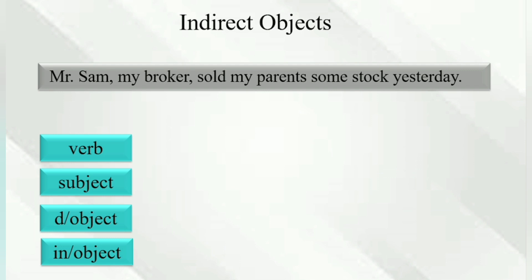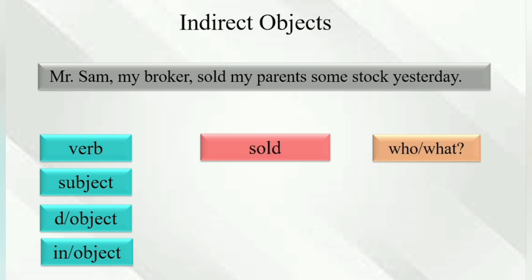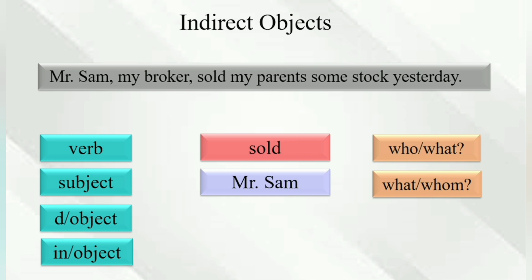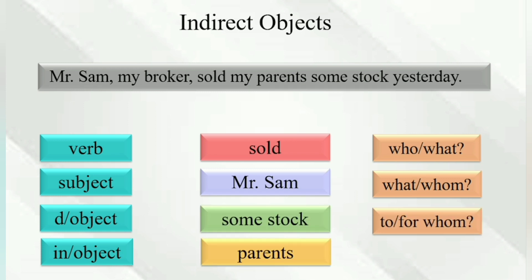'Mr. Sam my broker sold my parents some stock yesterday.' Sold — who sold? Mr. Sam. Mr. Sam sold what? Some stocks. Some stocks to whom? My parents. So 'my parents' is the indirect object.